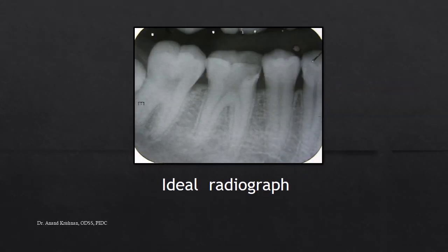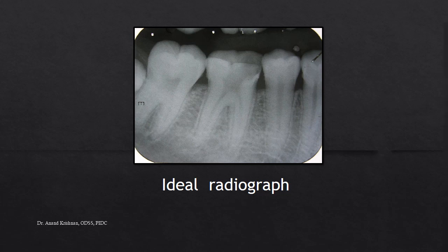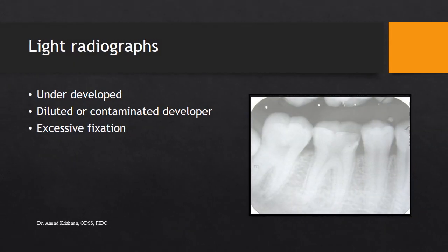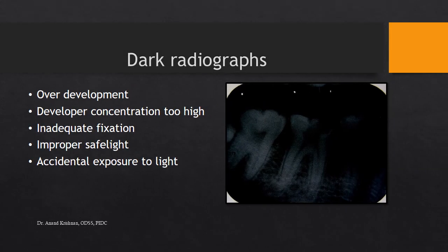Additional faults include insufficient contrast from under-development, under-exposure, excessive kVp, or film fog. Dark spots or lines occur due to fingerprints, static discharge, excessive bending of the film, or contact with developer before processing. Light spots occur when the film is contaminated with fixer before processing or contacts the sides of the processing container. Yellow-brown spots result from insufficient washing or contaminated/depleted solutions. Blurring is caused by patient movement during exposure or double exposure. An ideal radiograph should show individually distinguishable structures with clear sharpness and well-represented lesions.